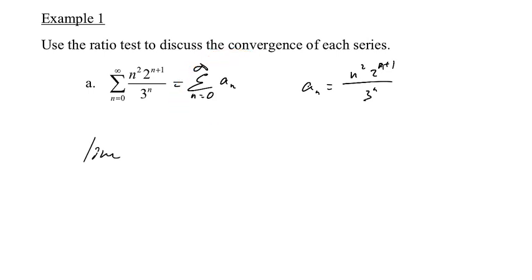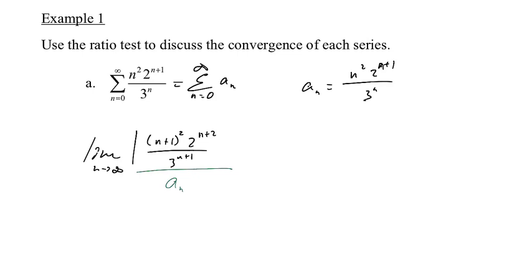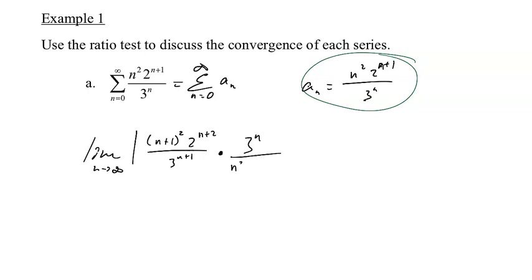So I'm going to do the limit as n approaches infinity of the absolute value of a_(n+1) over a_n. Substituting n+1 in, that gives (n+1)² · 2^(n+2) over 3^(n+1). Then dividing by a_n means multiplying by its reciprocal: 3^n over n² · 2^(n+1).